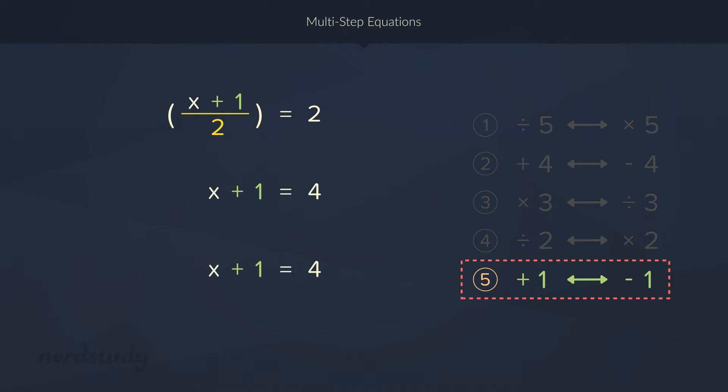And lastly, we need to subtract by 1. So, our variable finally becomes isolated and the right side equals 3. So, our final answer is 3.